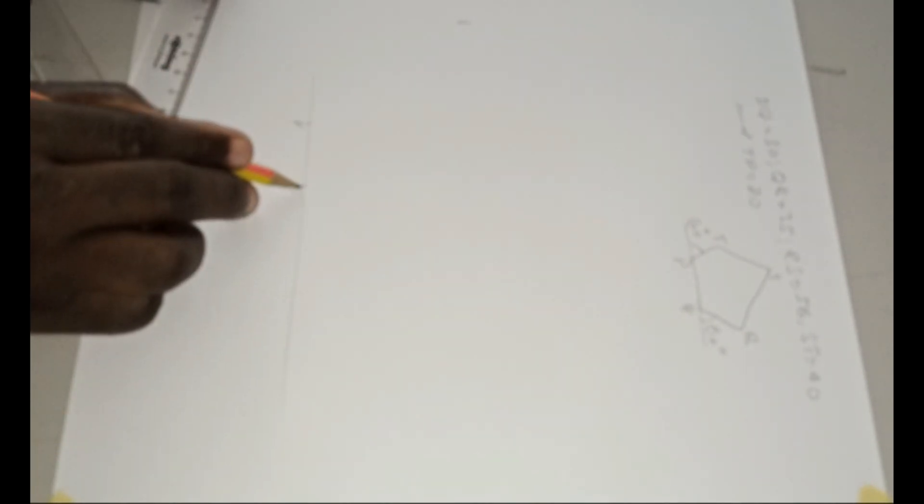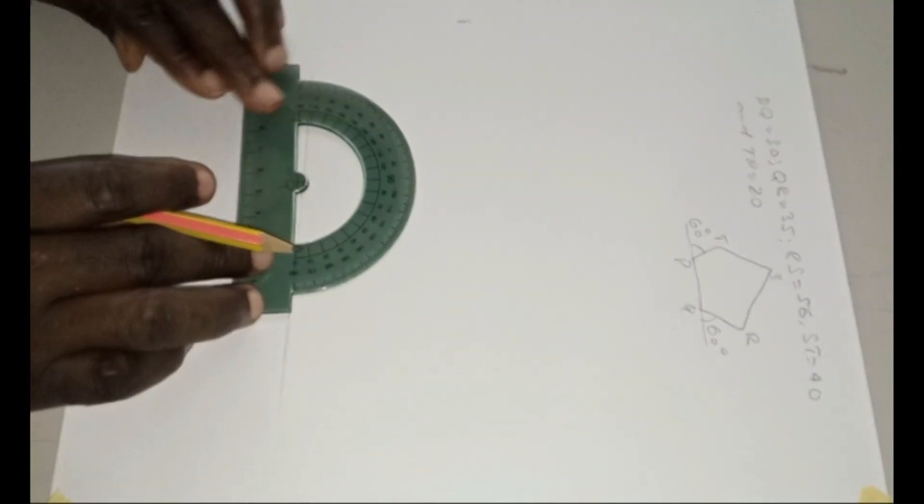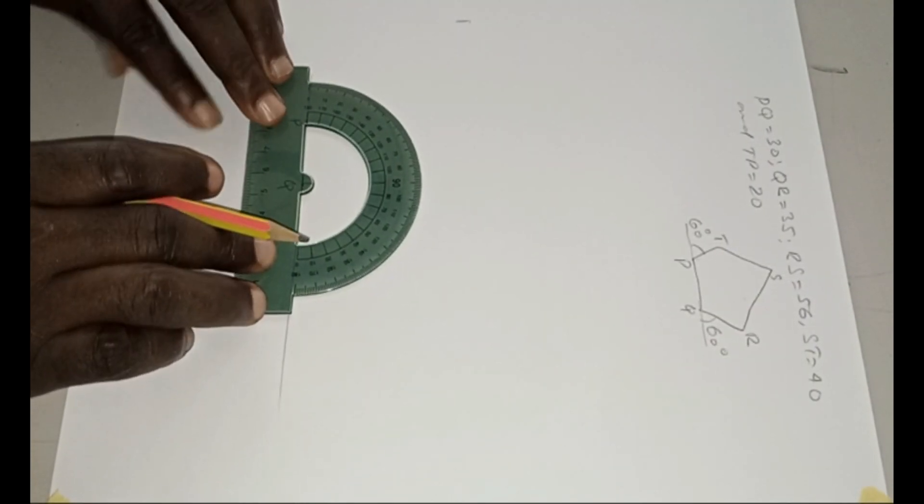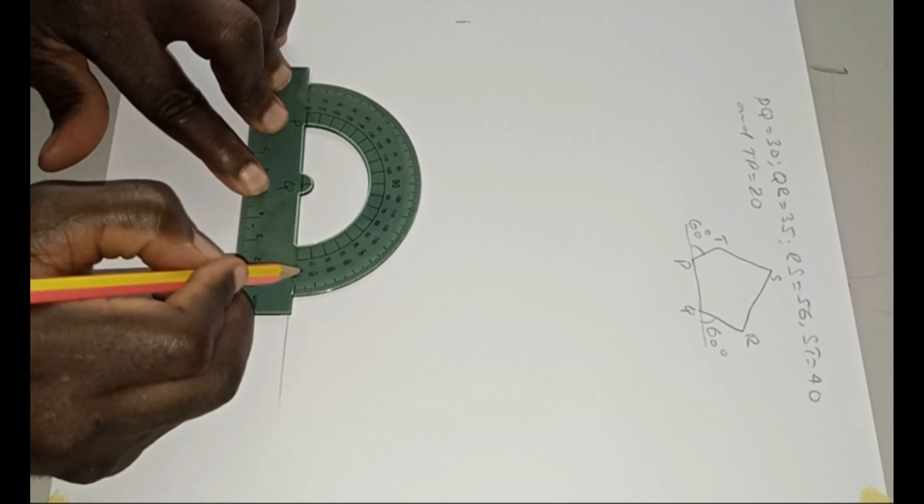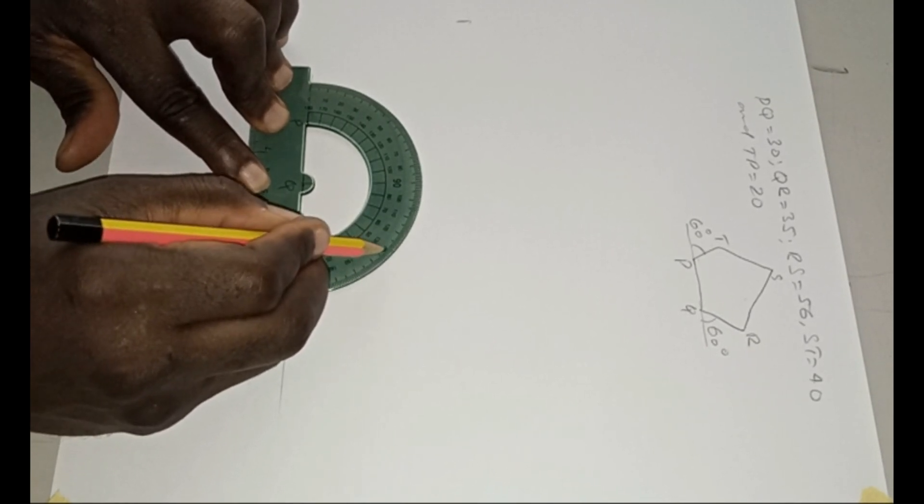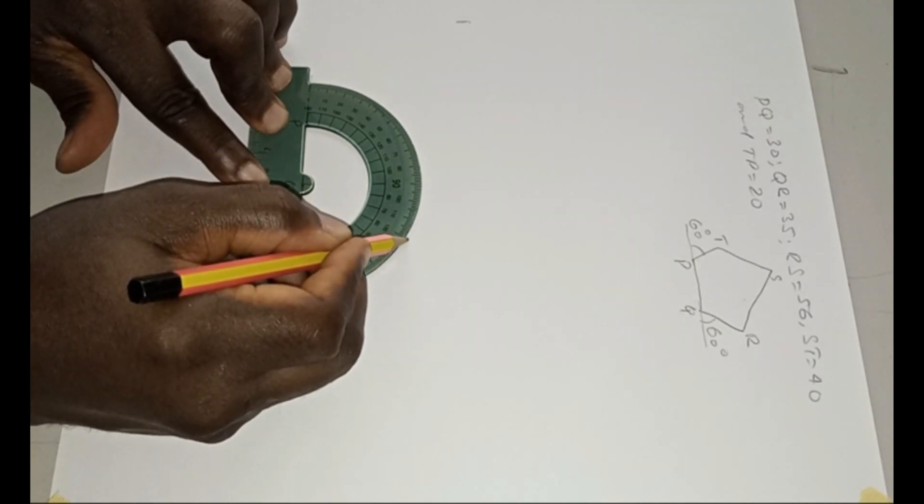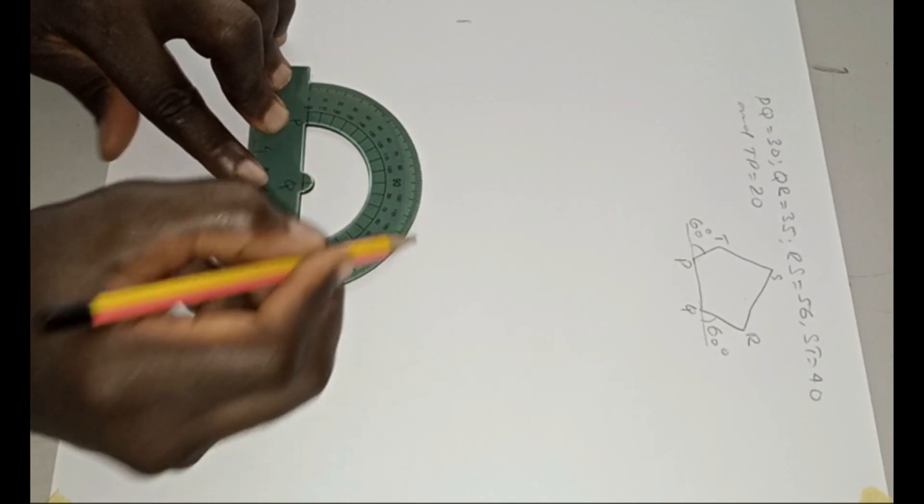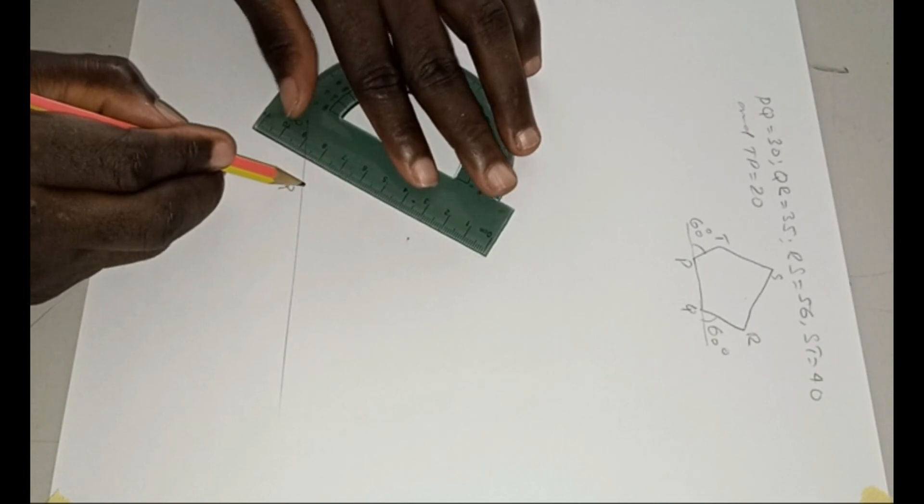And the external angle here is 60 degrees. You use your protractor like this and you measure 60. It's an external angle, so you start from here: 10, 20, 30, 40, 50, 60 is here. This is 60. So you can rule it like this.